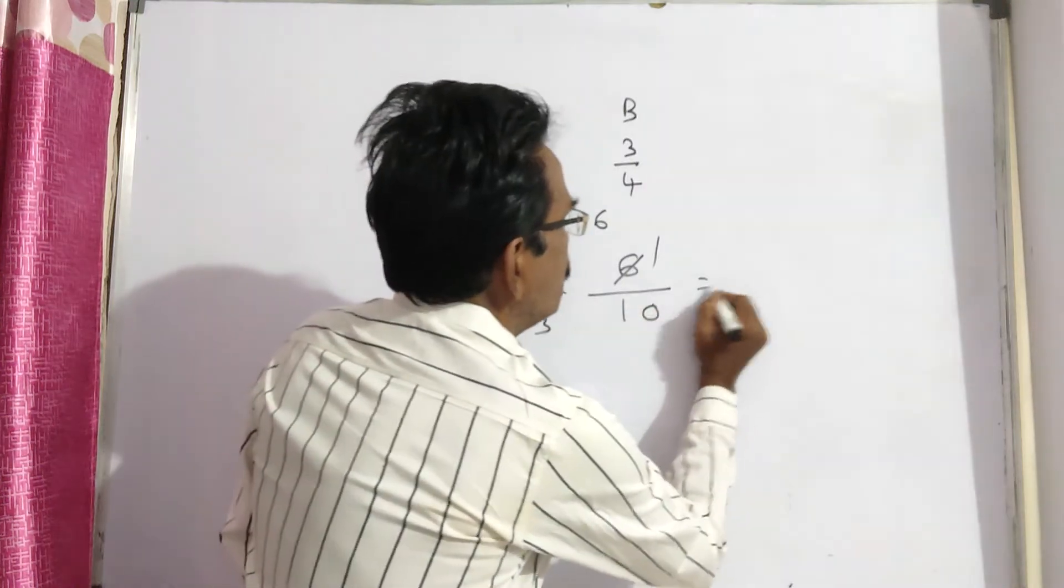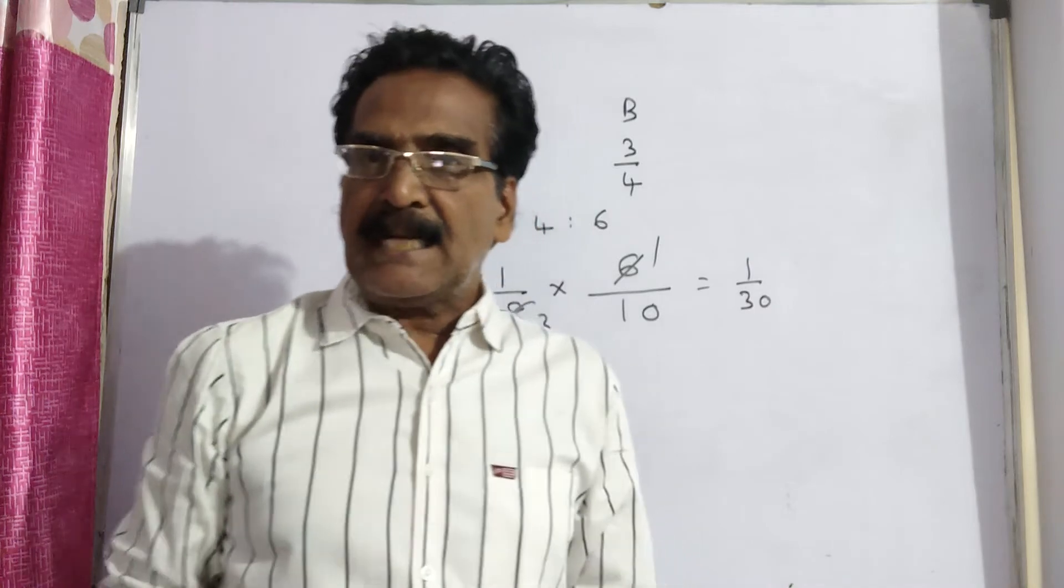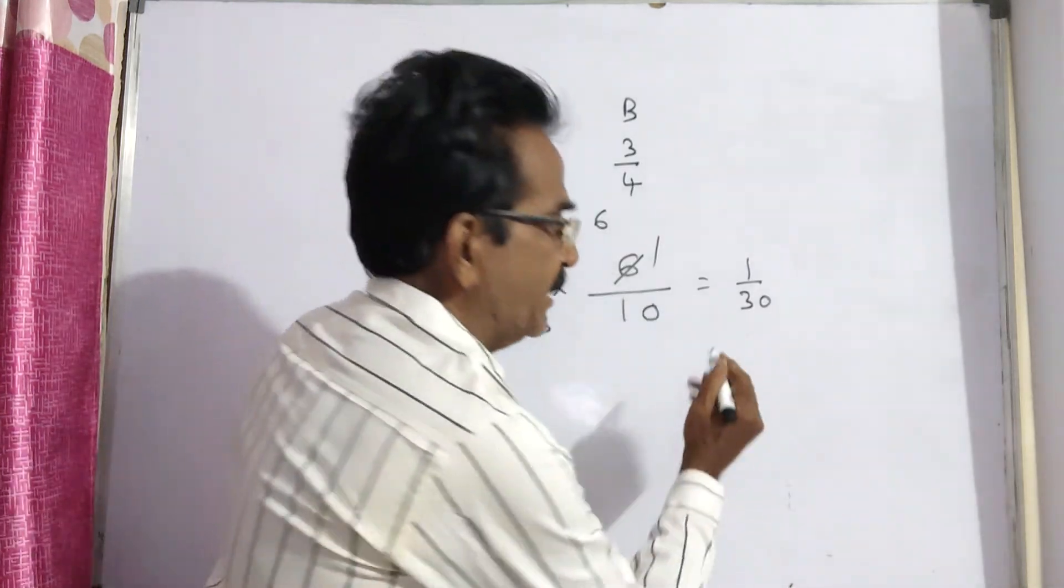Six parts. So 1 by 30. B does 1 by 30 work per day. That means B completes the work in 30 days, friends.